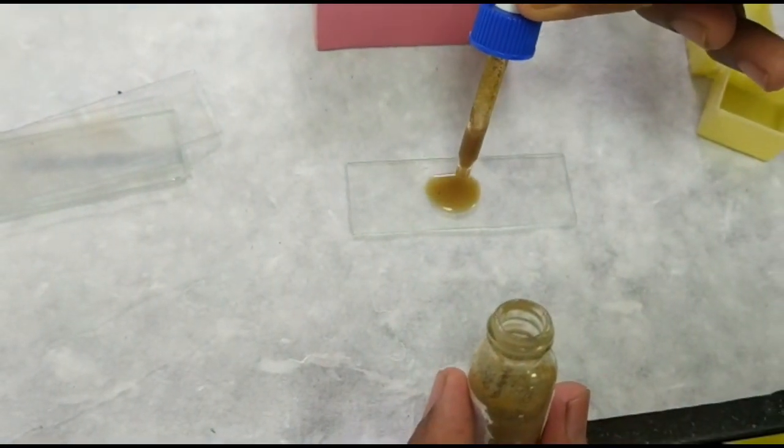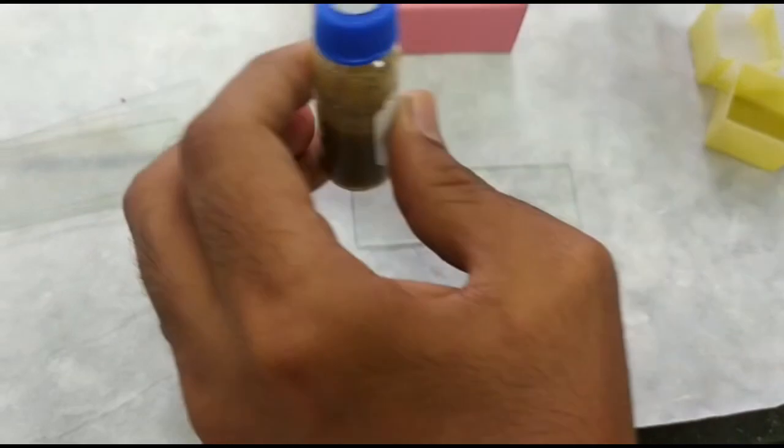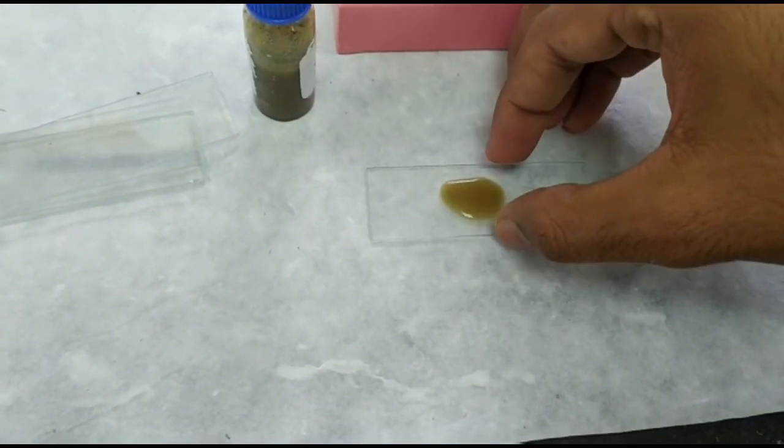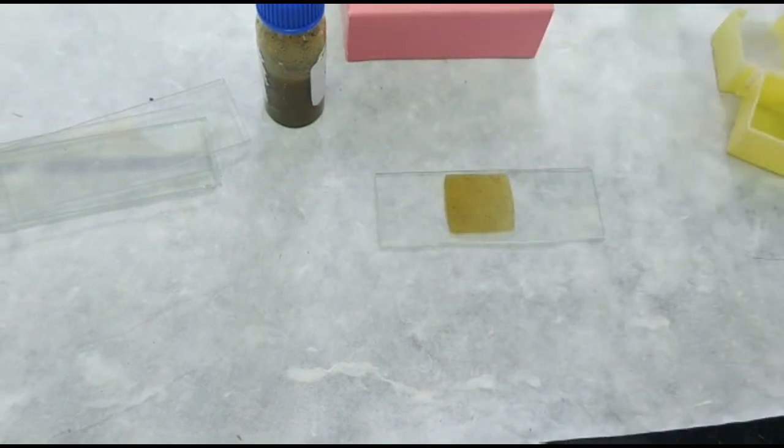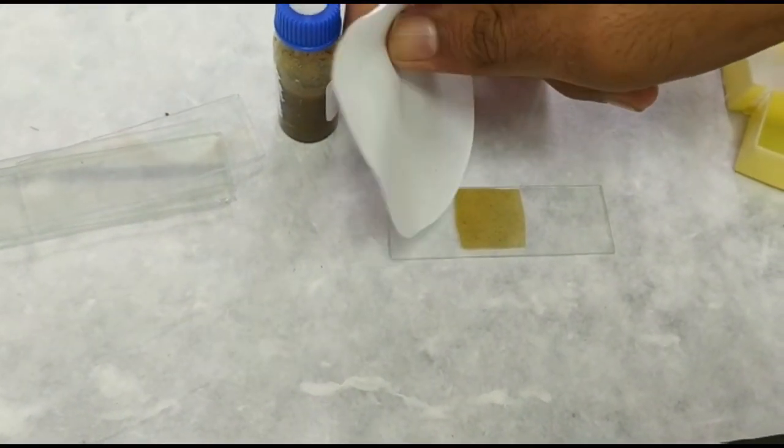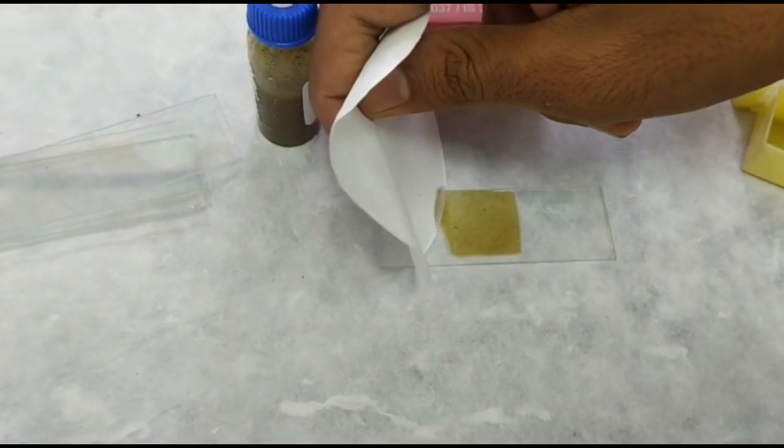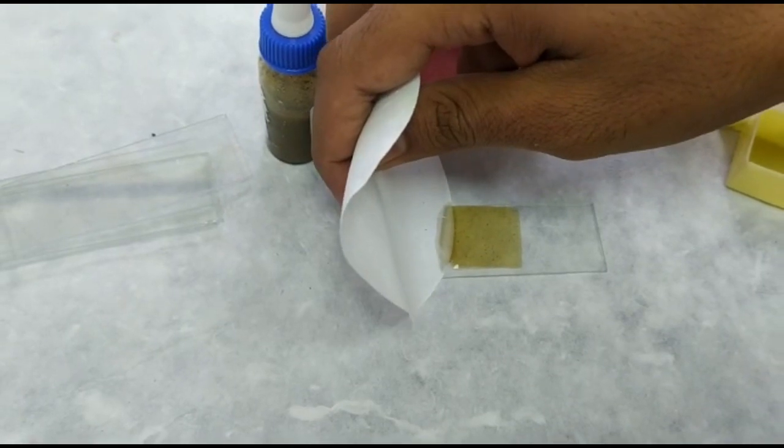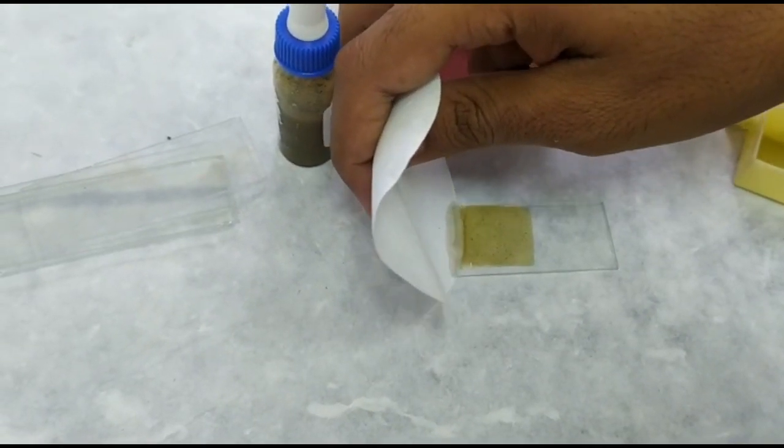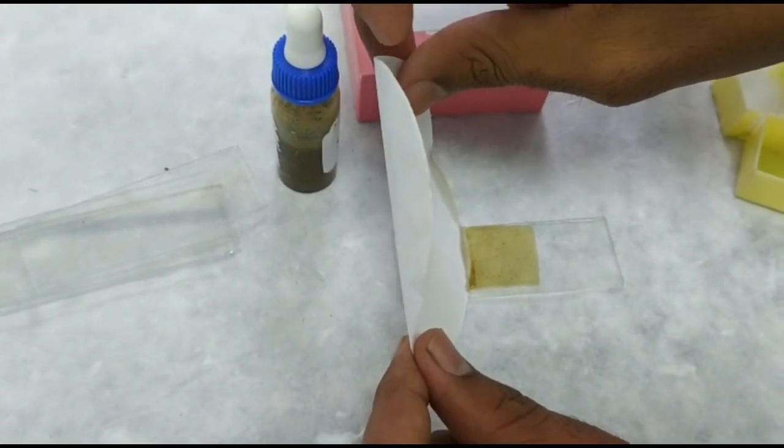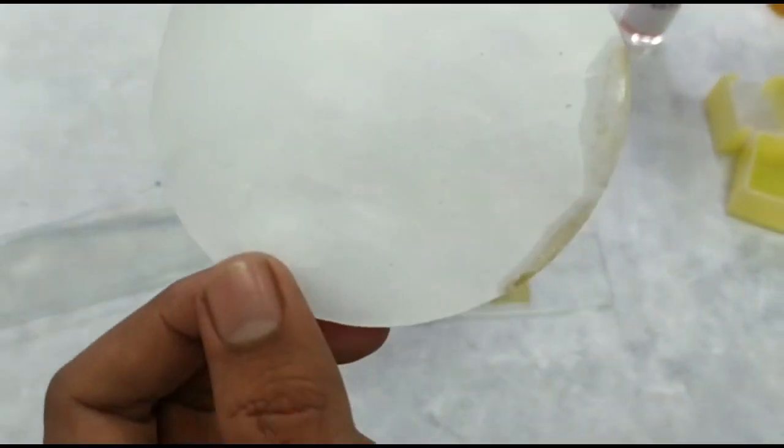Remember, if you take more than two drops, the cover slip will float and you may have to use filter paper to remove the excess stool specimen. It is at this time the filter paper due to capillary action will take away most of the eggs. This is the reason why filter paper should not be used.